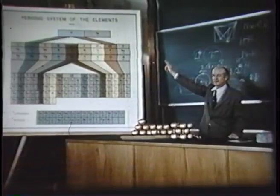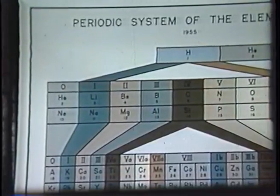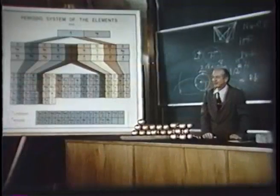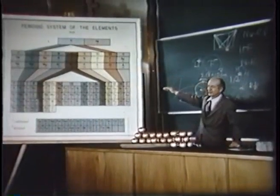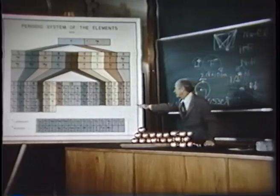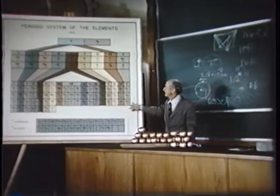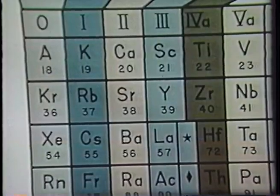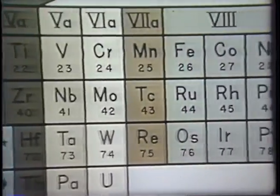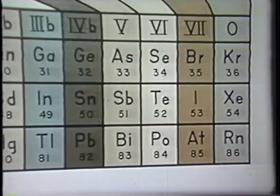The helium shell: 1 orbital, 2 elements. Outside of that is the neon shell — a 2s orbital and three 2p orbitals, 8 more electrons, bringing us up to atomic number 10. Then the argon shell of 8 electrons, the krypton shell of 18 electrons, the xenon shell of 18, the radon shell of 32, and going on to the next shell with 32 elements ending at 118. The elements from scandium on to zinc we may call the transition elements of the iron group — they correspond to putting 10 electrons into the five 3d orbitals.